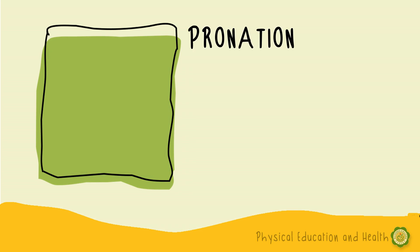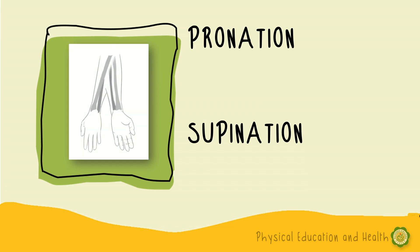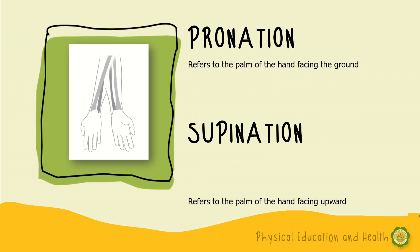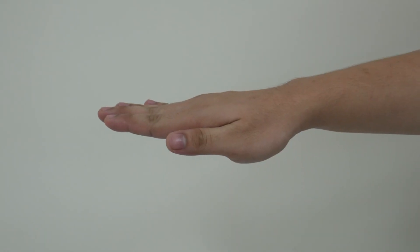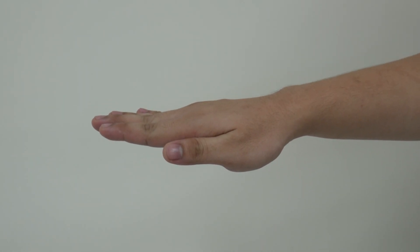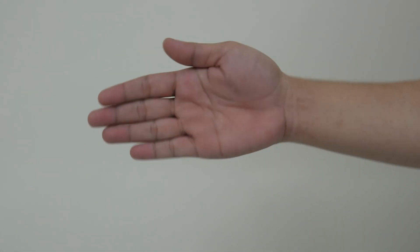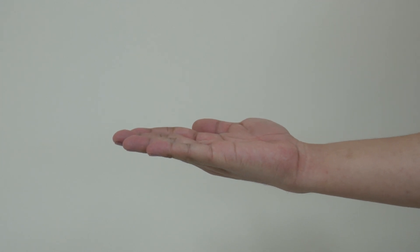Next is pronation and supination. Pronation refers to the palm of the hand facing the ground, and supination refers to the palm of the hand facing upward. Tatandaan: pronation — palm facing down; supination — palm facing up.